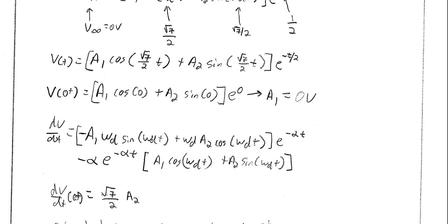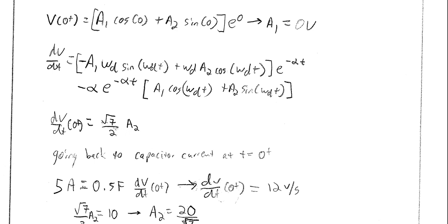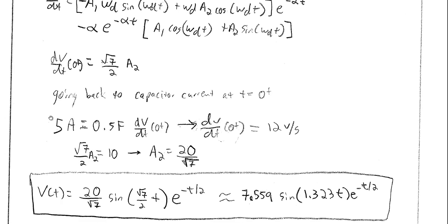Going back to the capacitor current at t equals zero-plus, we use I = C·dV/dt. The capacitor current was five amps, so five equals 0.5·dV/dt at zero-plus, giving dV/dt equals ten volts per second. Note: this value should be ten, not twelve — that is a second mistake in the posted solution. Therefore ω_D·A₂ equals ten, which gives A₂ equals 20/√7.